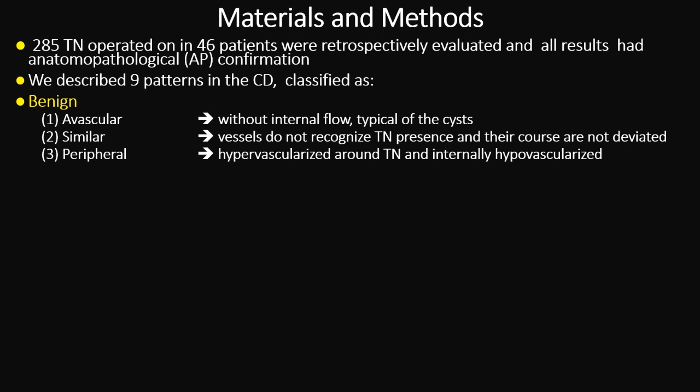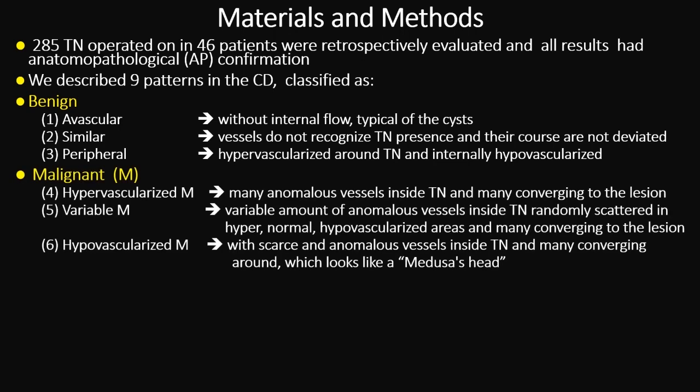We also describe three different malignant patterns. Hypervascularized, when many vessels are seen inside the thyroid nodule with an anomalous pattern and many converging to the lesion. Variable, when there is a variable amount of anomalous vessels inside the thyroid nodule, randomly scattered in a hypervascular or hypovascular fashion, with many vessels converging to the lesion. Hypovascularized malignant, with a scarce amount of vessels inside, but these few vessels appear tortuous or irregular in some way, with many converging to the lesion — resembling a medusa's head.